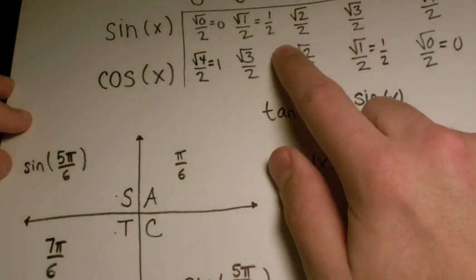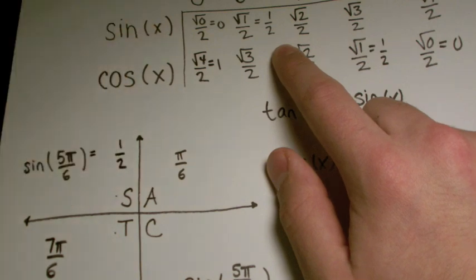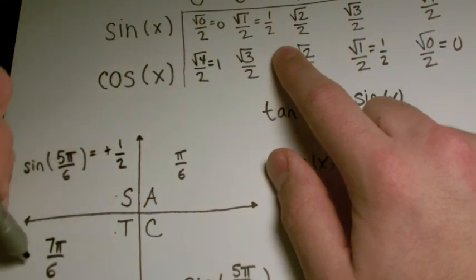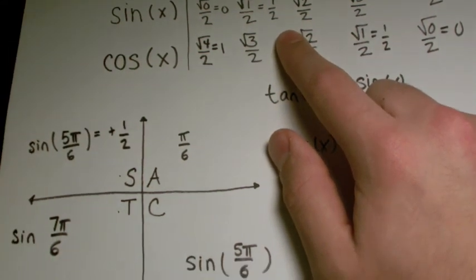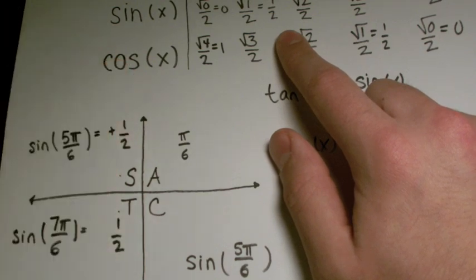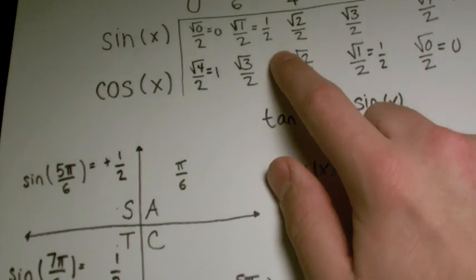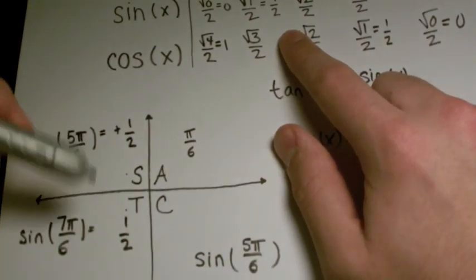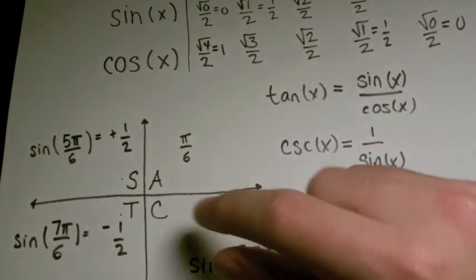Sine of 5π/6. We know the absolute value is 1/2. And we know in quadrant 2, sine is positive. So it's positive 1/2. And then down here we have sine of 7π/6. Well, we know the absolute value is 1/2. And we just need to know if it's positive or negative. And we know that sine in this third quadrant here is always negative. Okay? So that's it.